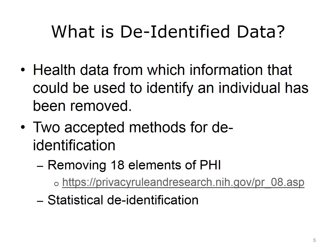De-identified health information is health data from which information that could be used to identify an individual has been removed. There are two accepted methods under HIPAA for data to be de-identified. One is to remove the 18 elements of protected health information, which are listed at the link provided here. The other is statistical de-identification by a person with appropriate knowledge of and experience with generally accepted statistical and scientific principles and methods for rendering information not individually identifiable.